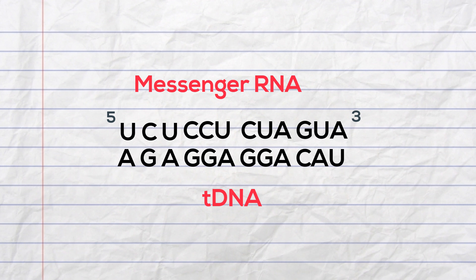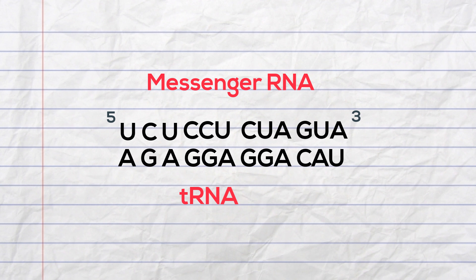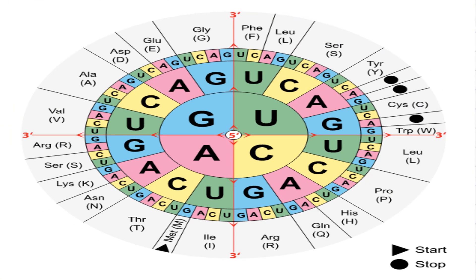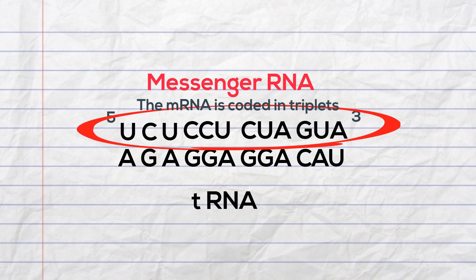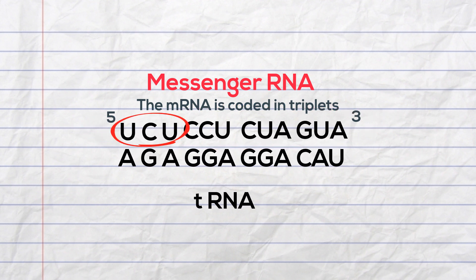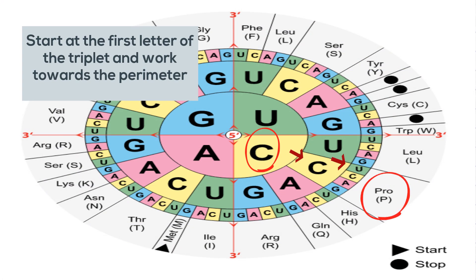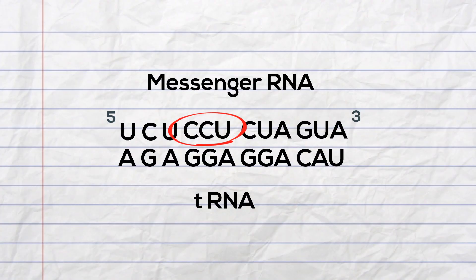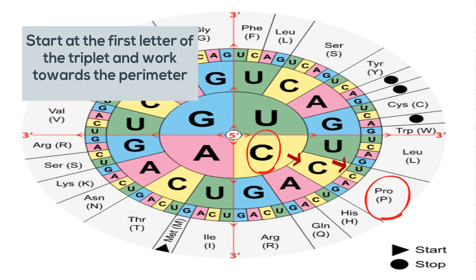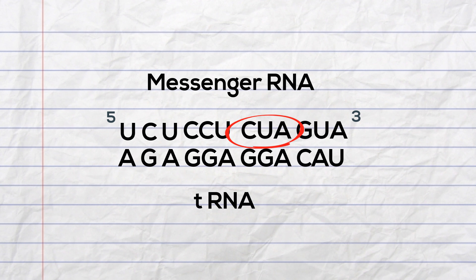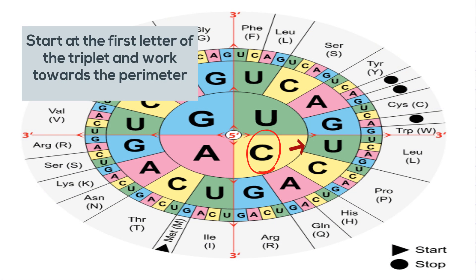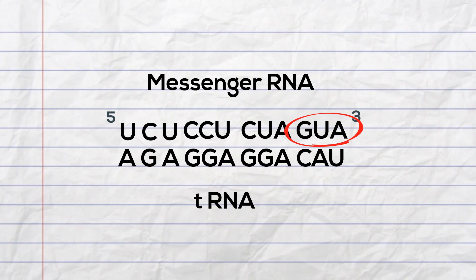Now let's find the amino acids. You'll need an amino acid chart, such as this one. You get the codon sequence from the messenger RNA. For example: U, C, U pairs up with one amino acid; C, C, U pairs with the next; then C, U, A gives the next amino acid; and G, U, A gives the final amino acid.